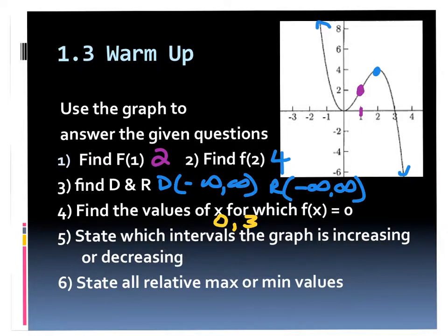It's asking for the x-values when the function touches 0. Remember that it could ask for zeros, roots, x-intercepts, or where f of x is 0 — all of those mean exactly the same thing. I don't know if I'd actually cost you points if you put it in point form, just make sure you'd have both (0, 0) and (3, 0).